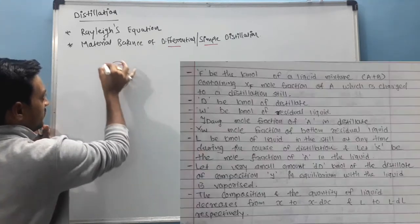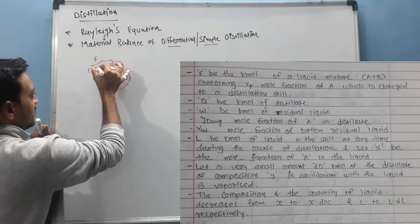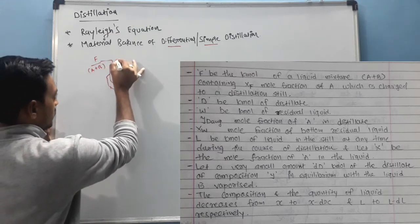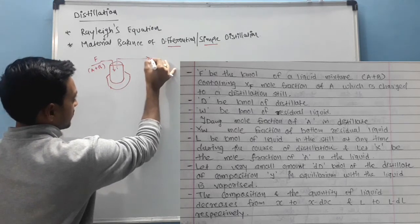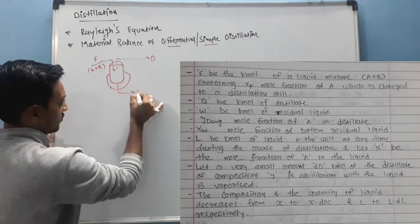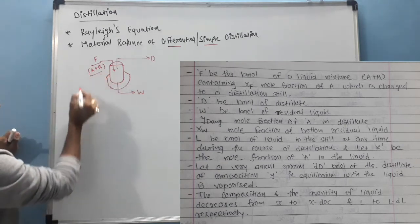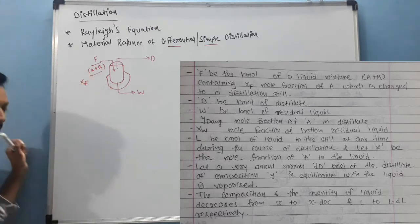We are introducing feed, it contains fraction A and B. So we perform distillation, it gets condensed, and from the bottom we get residue. So our feed is A and B and the fraction of A in feed is XF.